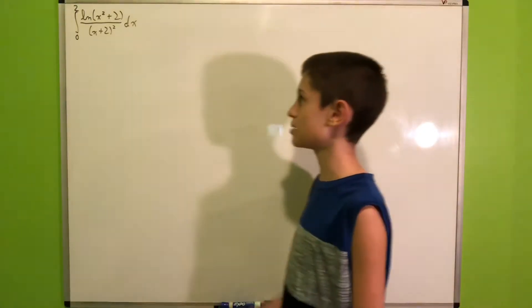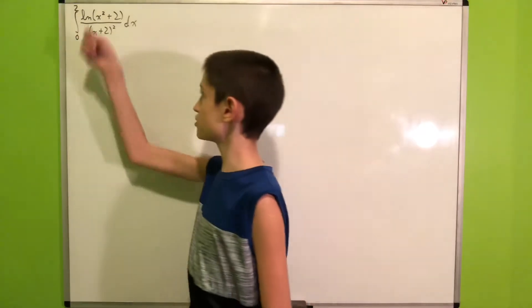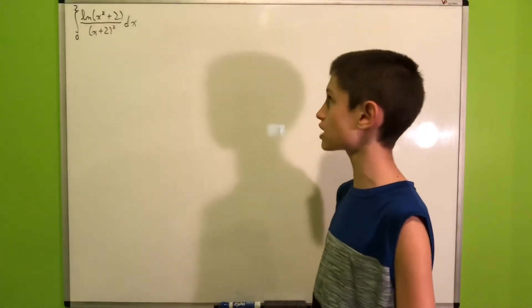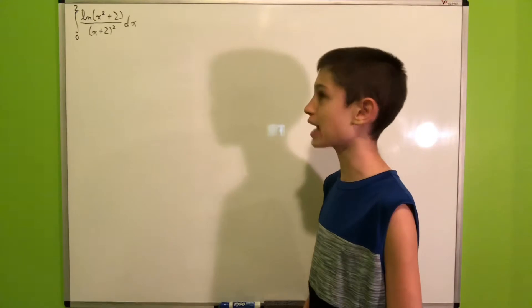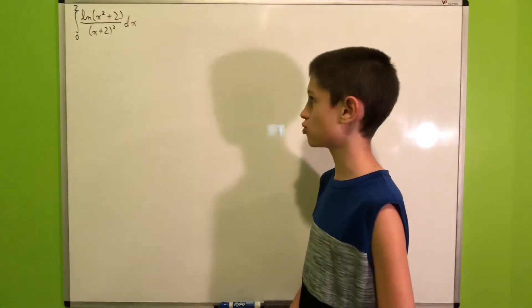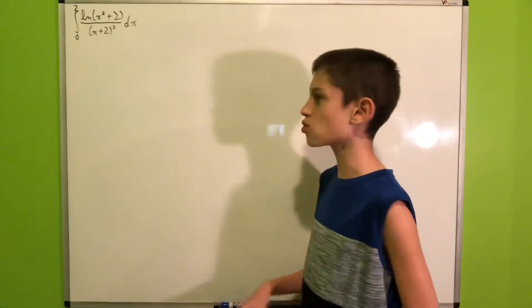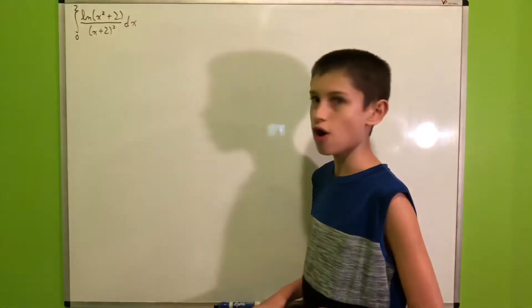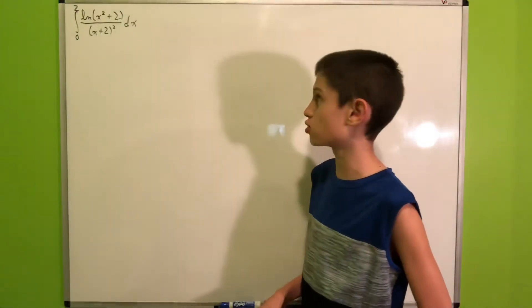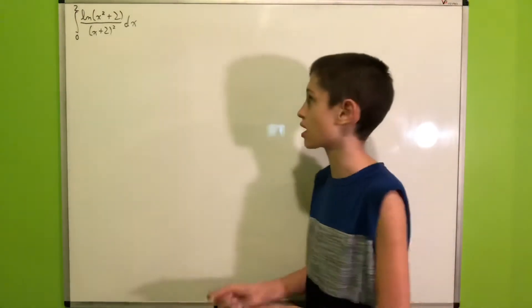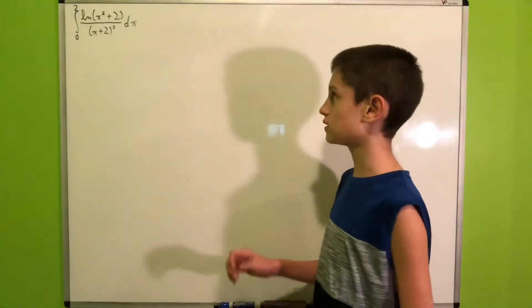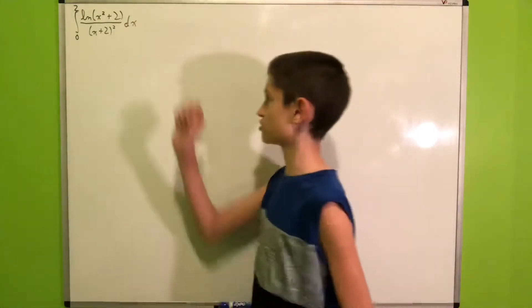Hi everyone! Today we will solve a viewer-suggested integral, namely the integral from 0 to 2 of the natural log of (x² + 2) all over (x + 2)², whole thing squared. I believe this integral was taken from an exercise book of some kind, just pointing that out for fun. So without further ado, let's start this integral.